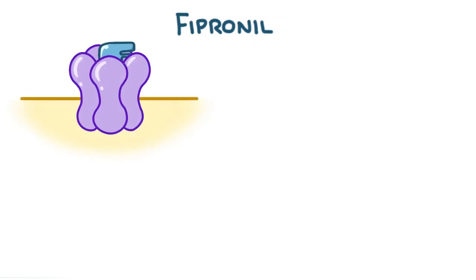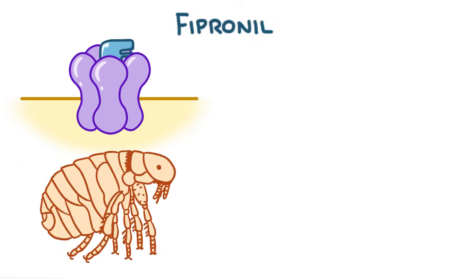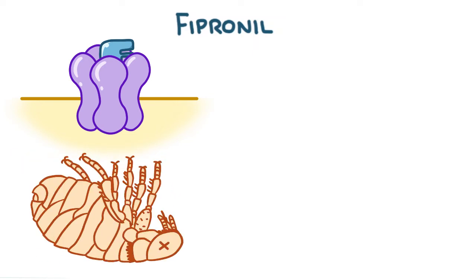Fipronil binds to GABA receptors, leading to the inhibition of chloride ion influx in the nerve cells of insects. This makes them hyper-excitable, then they die. It also works against acarids, ticks, and mites.